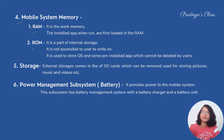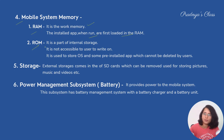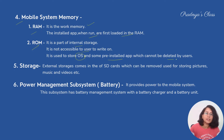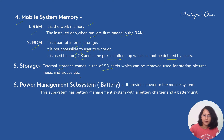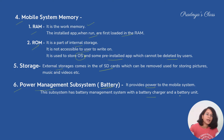For mobile memory, there are two types: RAM, which is the work memory, and ROM, which is part of internal storage not accessible to the user — it stores the operating system and some pre-installed apps that cannot be deleted. For external storage, we have an SD card where we can store our data. There is also the battery, known as the power management system, which provides power and comes with a battery charger and battery unit.